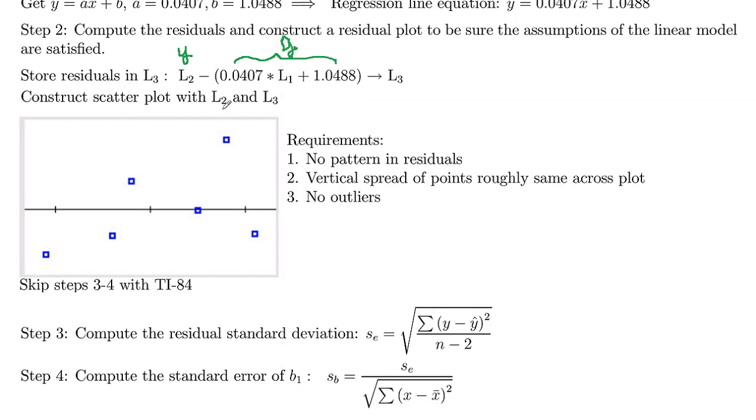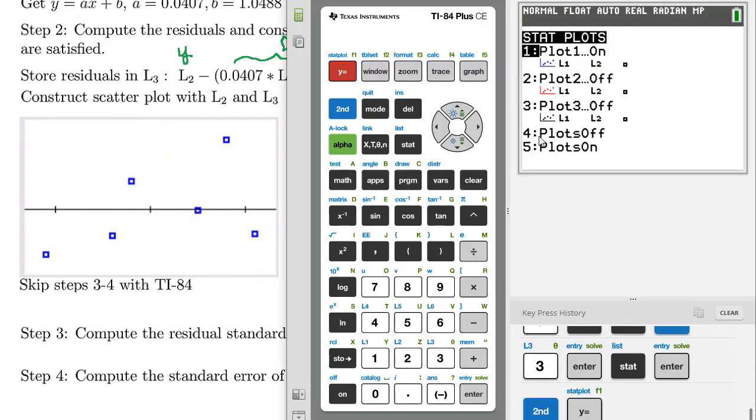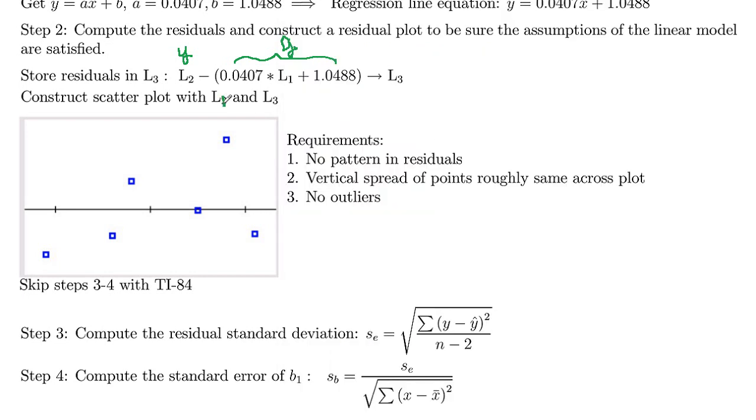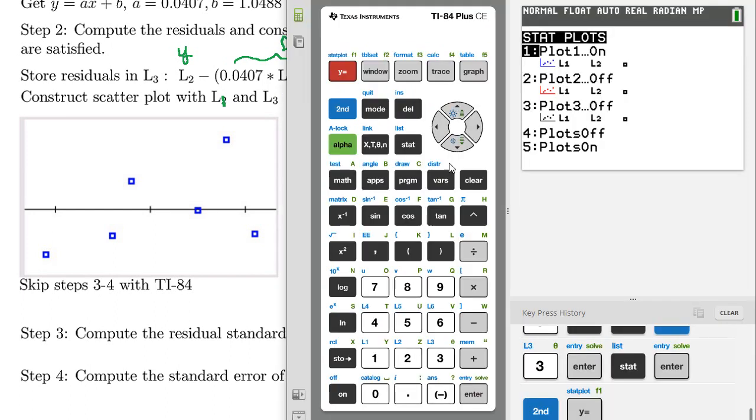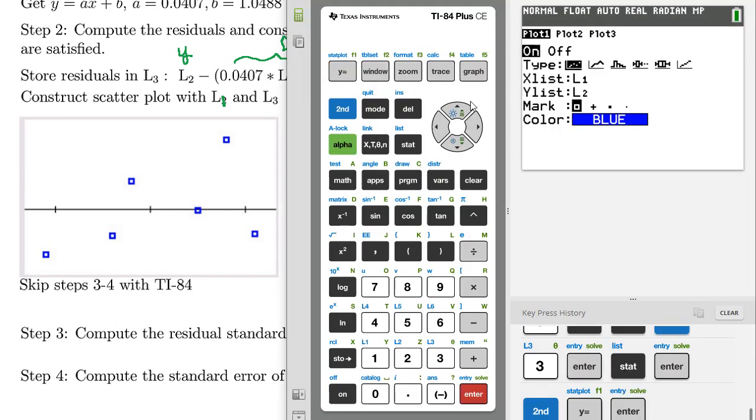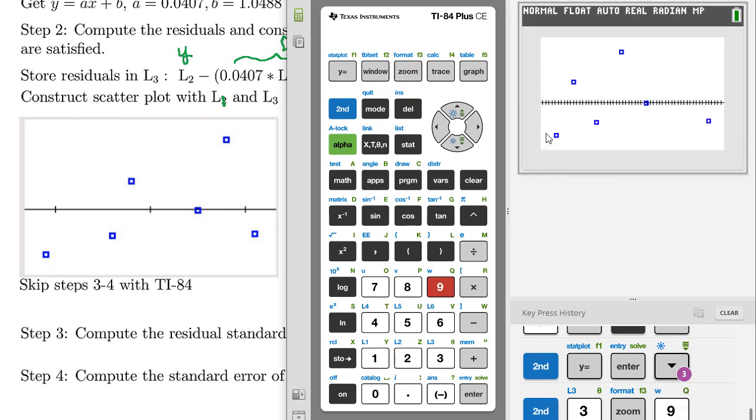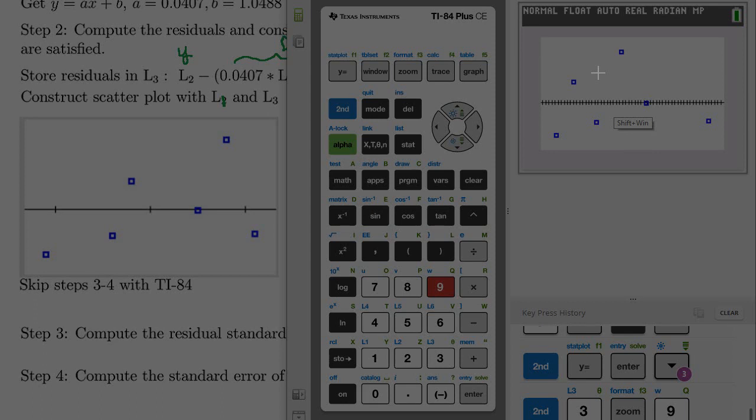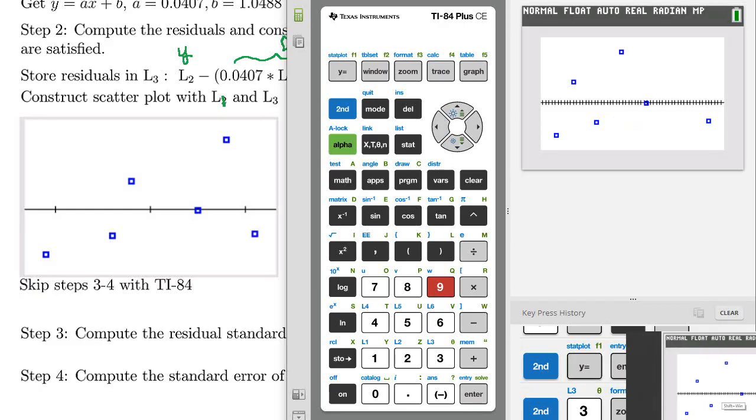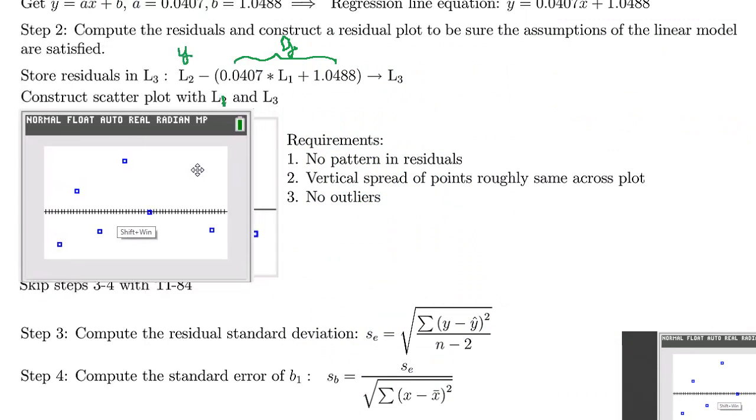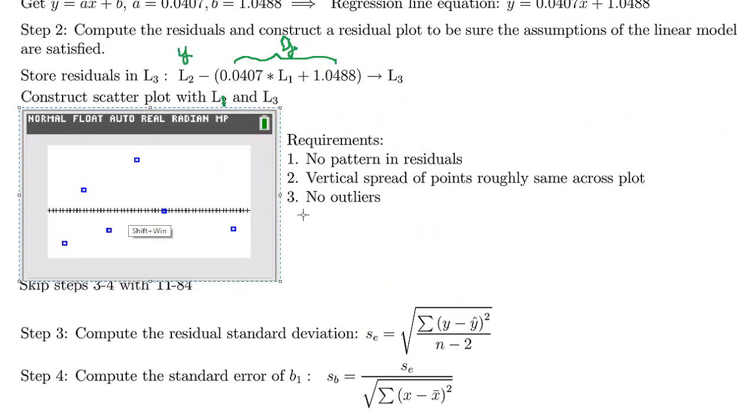Actually, we want list one and three. So we'll go ahead and press enter and come down and change list two to list three, so that's the second function of three. Now we've got list three in there. Now we're going to go to the zoom menu and zoom stat, which is number nine. And here we see our scatter plot. And I'll go ahead and copy that and paste it into our document here, just so we can look at that.